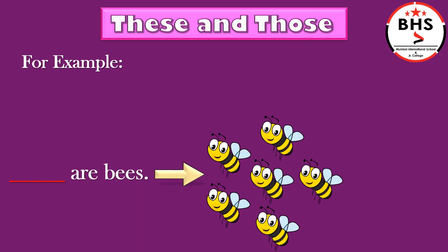Dash are bees. Children, here, there are more than one bee and the short arrow shows they are near. Hence, we will use these. These are bees.